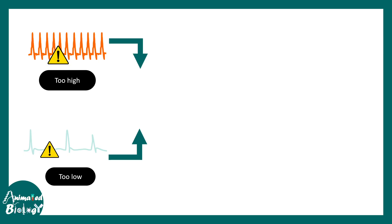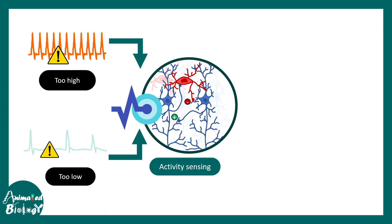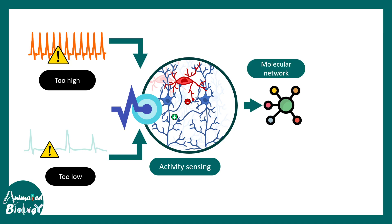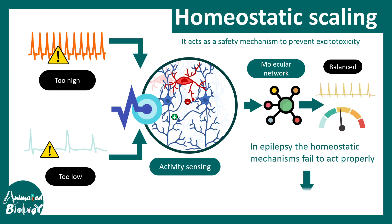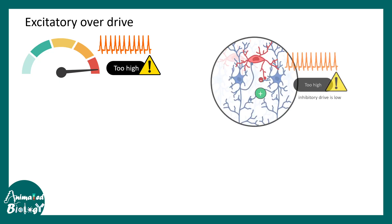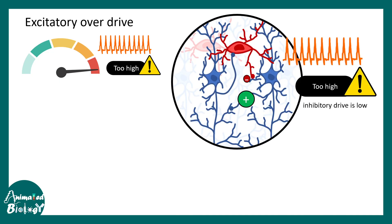When there is too high or too low activity in the brain, specific sensors can detect these activity changes and coordinate with a molecular network to enforce the activity back to a balanced level. This is known as the homeostatic scaling mechanism in our nervous system. Current research shows that homeostatic scaling mechanism fails in epilepsy — generally it acts as a safety mechanism to prevent excitotoxicity, but in epilepsy this mechanism goes wrong.